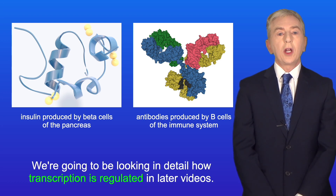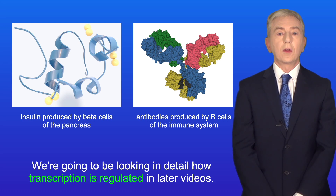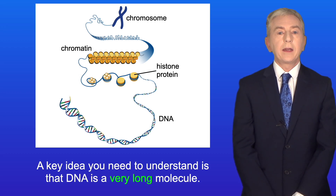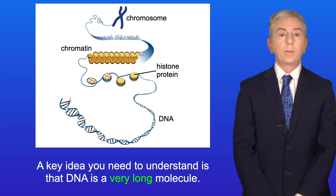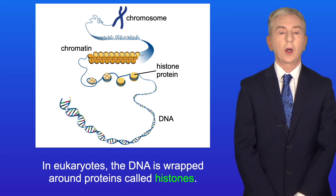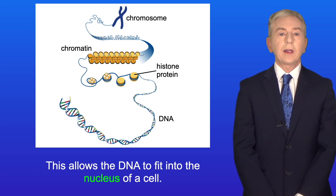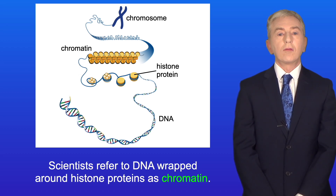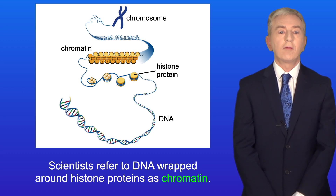We're going to be looking in detail at how transcription is regulated in later videos. In this video we're looking at the role of chromatin. A key idea is that DNA is a very long molecule. In eukaryotes the DNA is wrapped around proteins called histones, and this allows the DNA to fit into the nucleus of a cell. Scientists refer to DNA wrapped around histone proteins as chromatin.